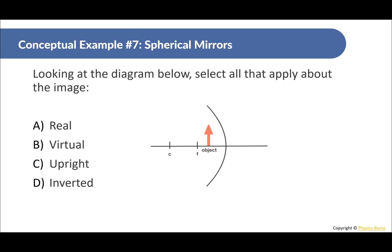Example 4: Drawing the rays — one parallel reflecting through the focal point, one through the focal point reflecting parallel. In this case, the rays diverge rather than converge, because the object is very close to the mirror, inside the focal point. The extensions of the reflected rays meet behind the mirror, so the image is virtual and upright.